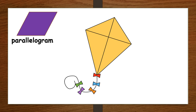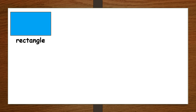The shape is a parallelogram. What is this shape? It's a rectangle. Say it together: Rectangle. Rectangle.